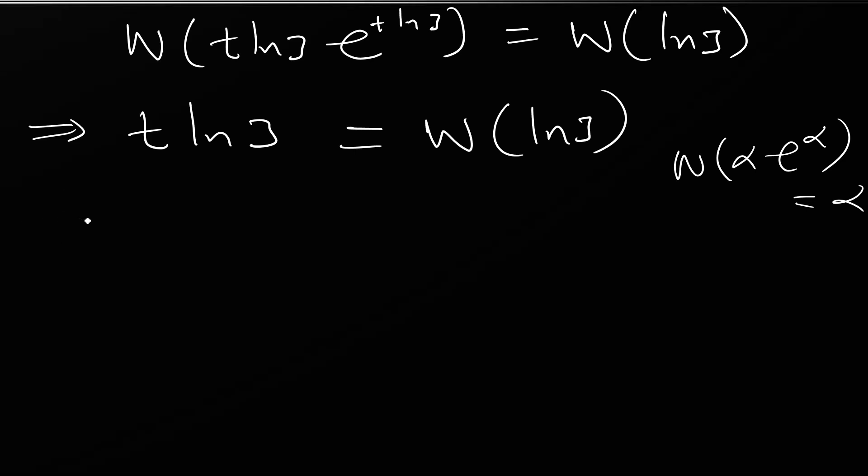We can divide both sides by ln of 3. We have t equals W function of ln of 3 over ln of 3.